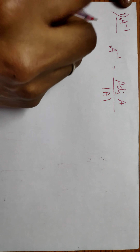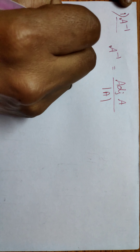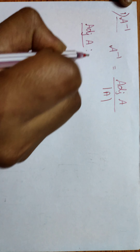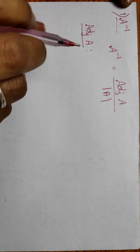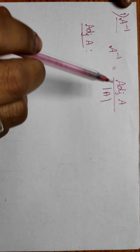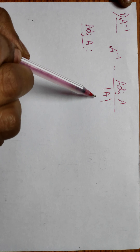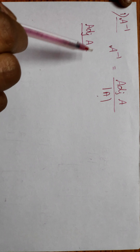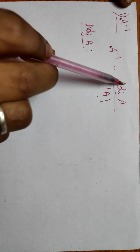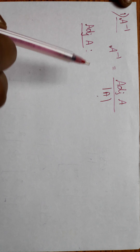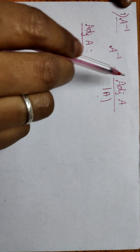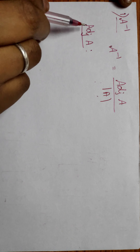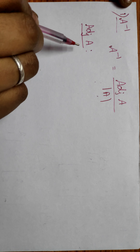For adjoint of A — how we will find the adjoint of A? In the previous lecture, we have seen how to find the adjoint of A and determinant of A. So we have to perform those operations individually, then we will perform the division. Using that result, we will perform this division operation. First, the adjoint of A.